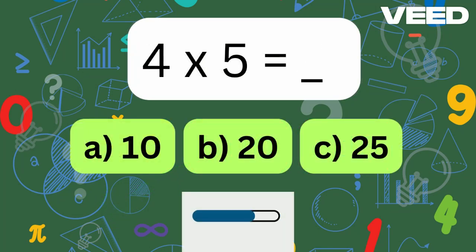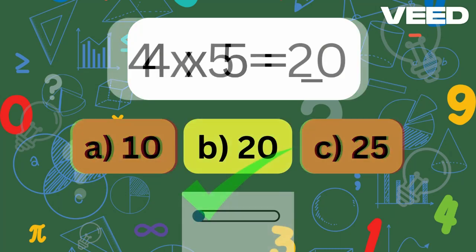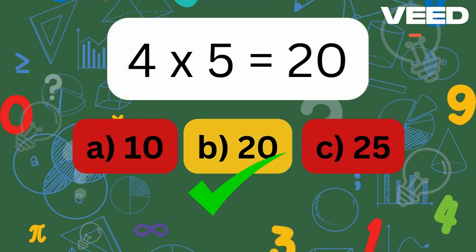What is 4 times 5? You got it, 4 times 5 is 20.